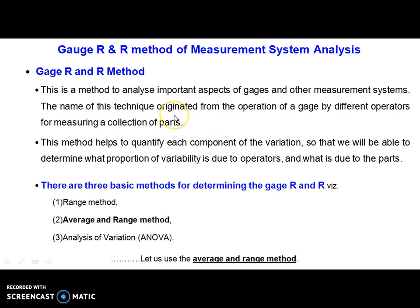The Gauge R&R method is used to analyze important aspects of gauges — that is, instruments — as well as other important components of the measurement system. This method helps to quantify each component of variation so that we can determine what portion of variability is introducing errors in the process, whether it is due to the operator or due to the parts.